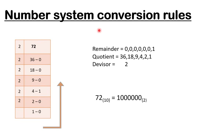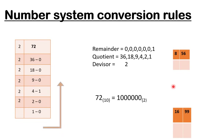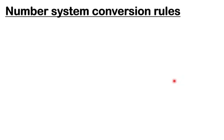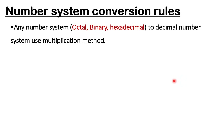Here we have the remainders, quotients, and divisor. If you want to convert a decimal number to octal, you divide by 8 because the base of octal is 8. Similarly, if you want to convert decimal to hexadecimal, you divide by 16.